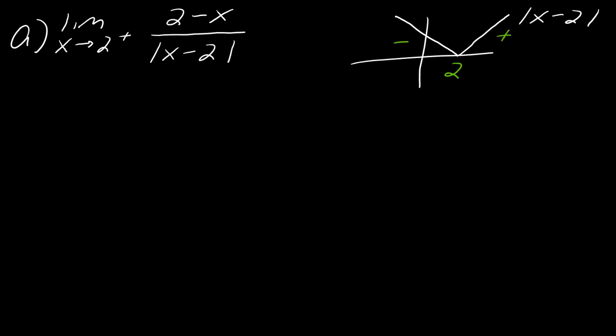So this matters because it's going to dictate basically how you can rearrange this problem. Because the problem is that as this stands, you cannot just cancel stuff out. You have to actually rewrite the absolute value in a way so that you could actually cancel. So you're not allowed to cancel at this point.